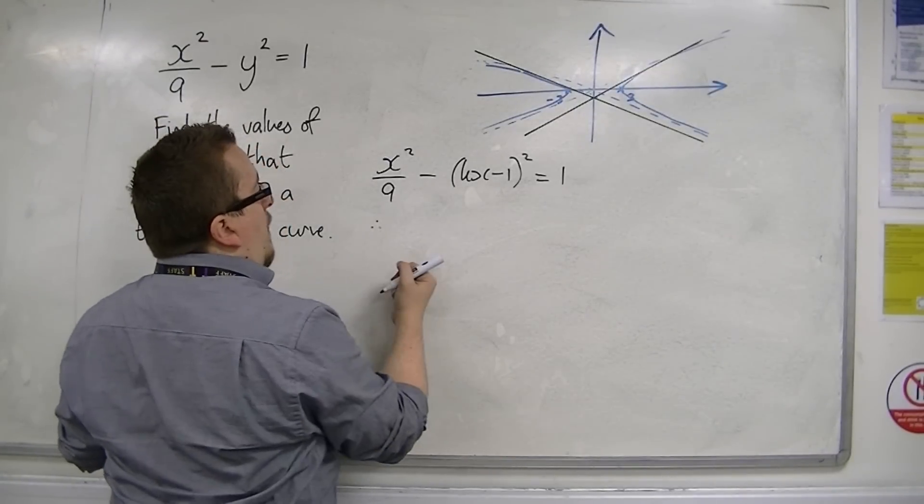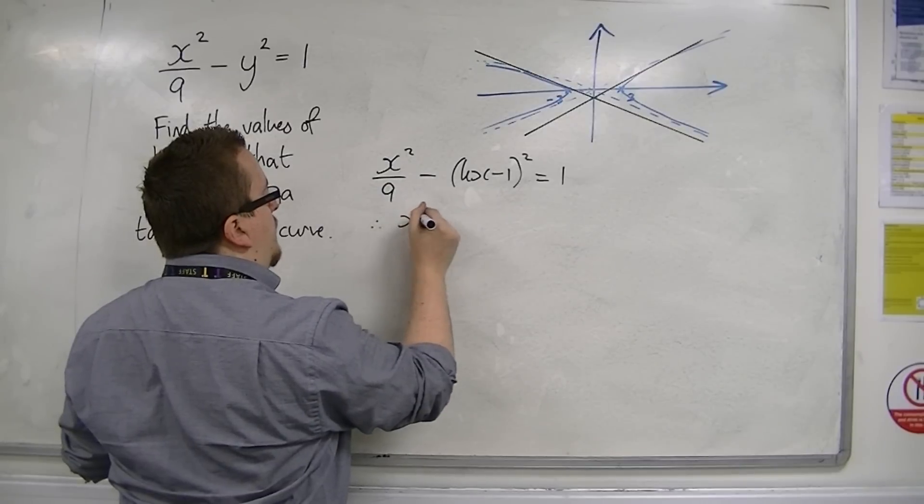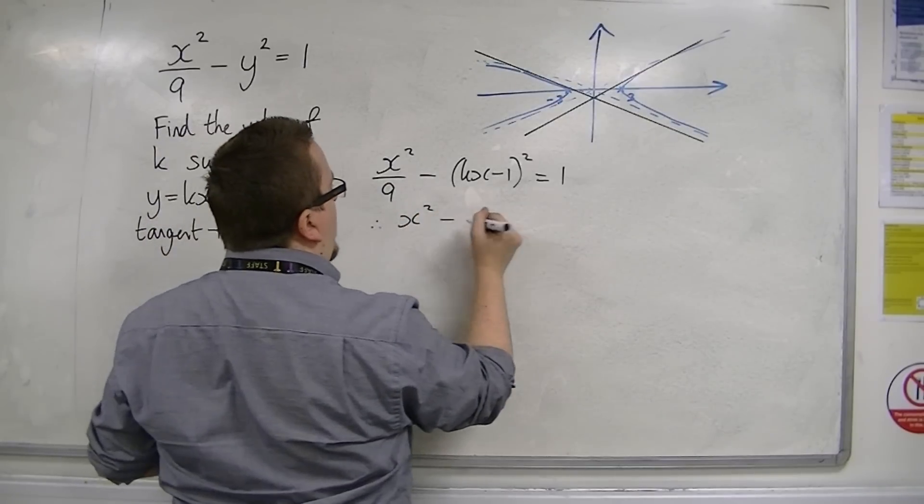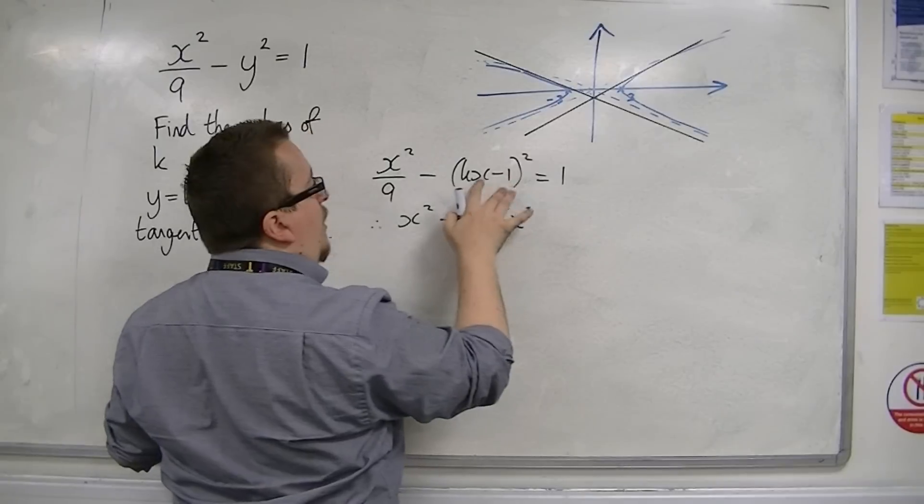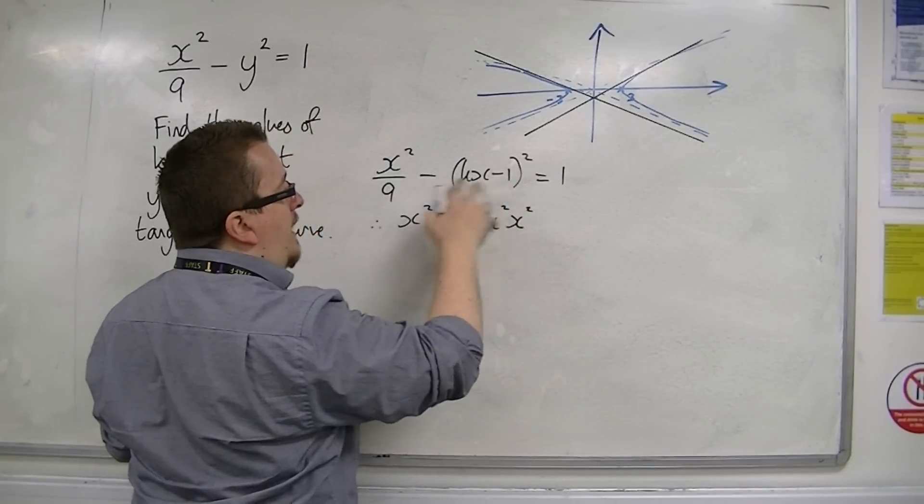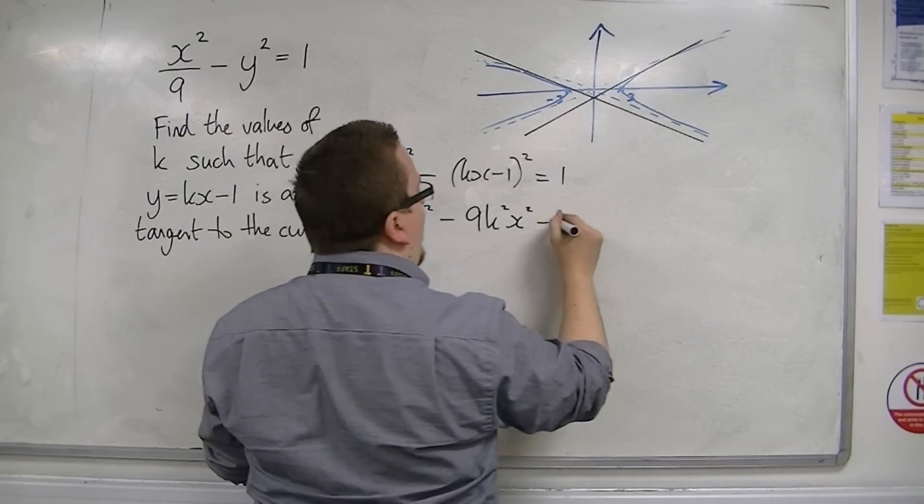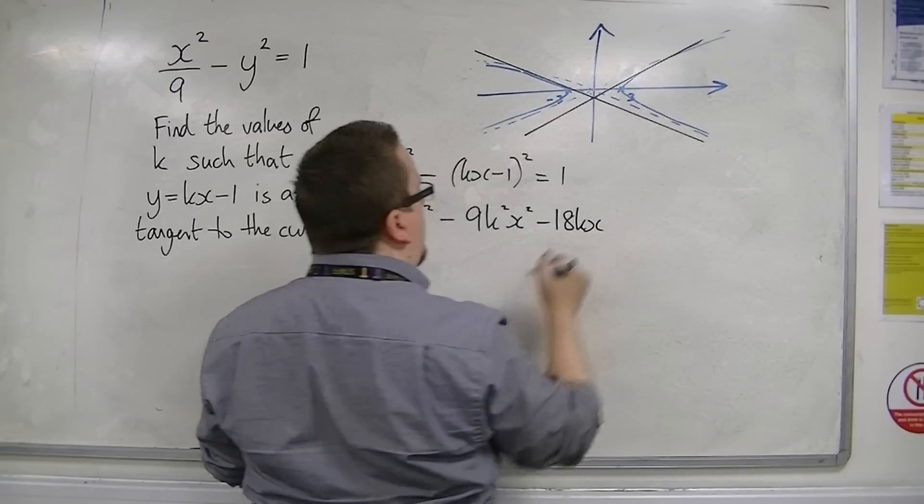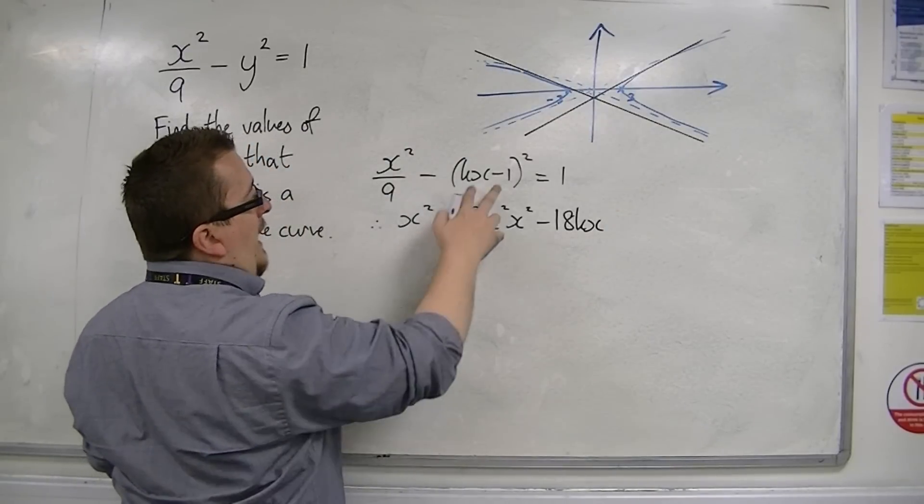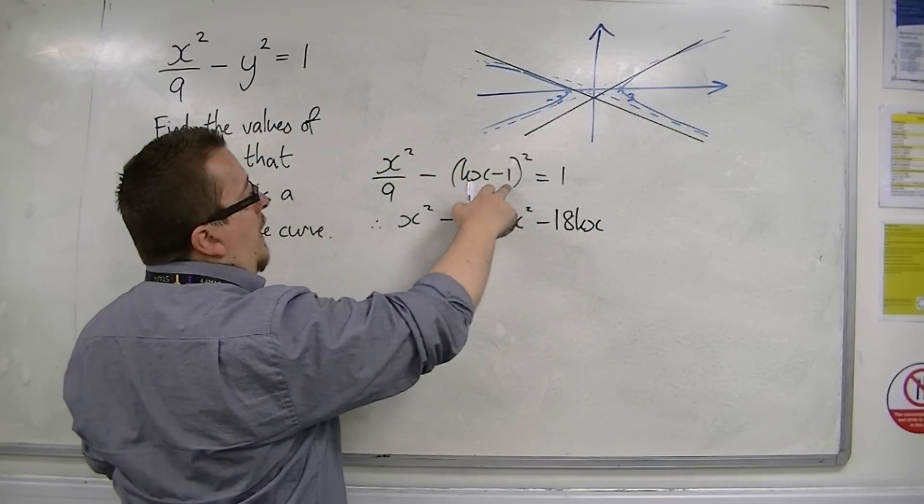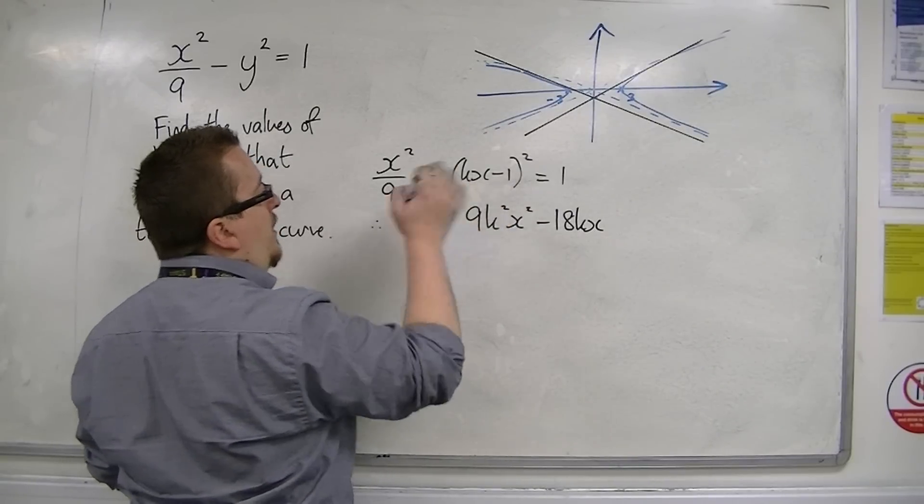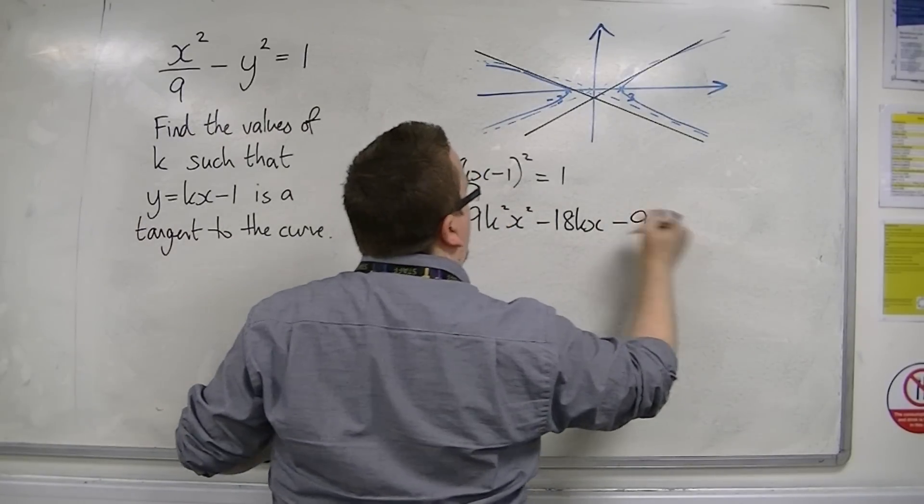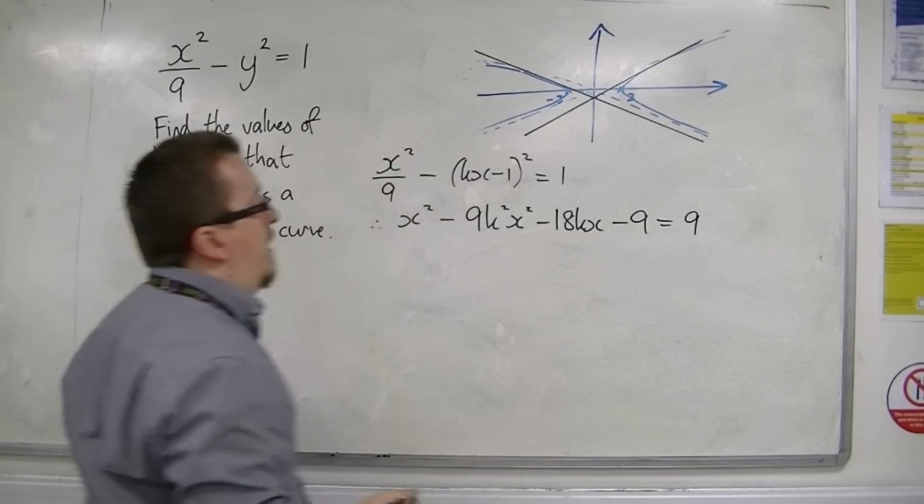So I'm going to multiply everything through by 9. So I'm going to have x squared take away 9k squared x squared. I'm going to get minus 2kx multiplied by 9, so minus 18kx. And I'm also going to get a plus 1, but that's going to be a take away 1, so it's going to be minus 1 times by 9 to minus 9. And I'm going to have a 9 on the right-hand side as well.